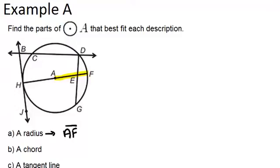Now a chord, for part B, a chord is a segment that connects two points on the circle. So for example, CD would be a chord. You could also do DG as a chord as well, or HF. Because all three of those segments connect two points on the circle. So CD is one example.